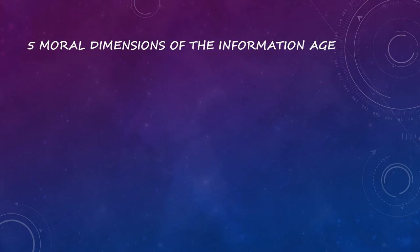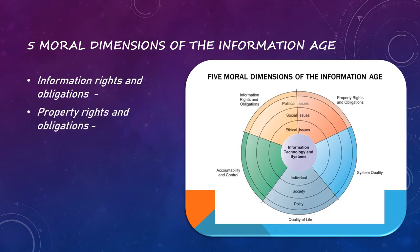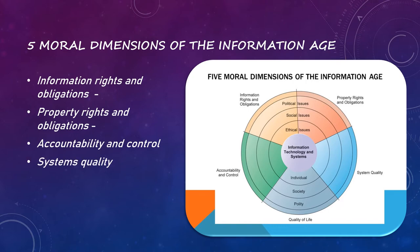The introduction of new information technology has a ripple effect, raising new ethical, social, and political issues that must be dealt with at the individual, social, and political levels. The major moral dimensions include: information rights and obligations — privacy and freedom in the internet age; property rights — including intellectual property; accountability and control — who will be held accountable and liable for harm to individuals; system quality — data quality and system errors; and quality of life — equity, access, and boundaries.